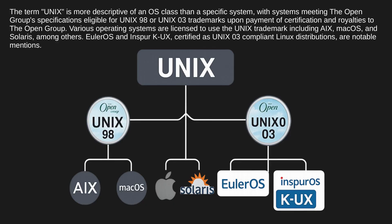The term 'Unix' is more descriptive of an OS class than a specific system, with systems meeting the Open Group specifications eligible for Unix 98 or Unix 03 trademarks upon payment of certification fees and royalties. Various operating systems are licensed to use the Unix trademark, including AIX, macOS, and Solaris, among others. EulerOS and Inspur K-UX, certified as Unix 03 compliant Linux distributions, are notable mentions.